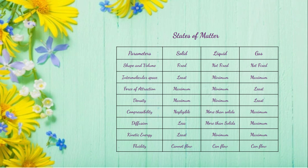Let's differentiate solid, liquid, and gas on the given parameters. Shape and volume: solids have fixed shape and volume. Liquids and gases do not have fixed shape and volume. Inter-molecular space is least in solids, minimum in liquids, and maximum in gas.